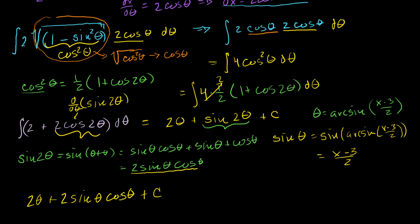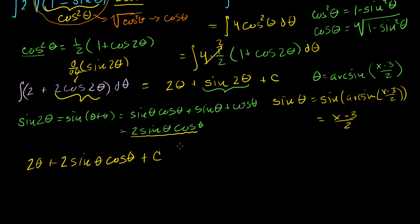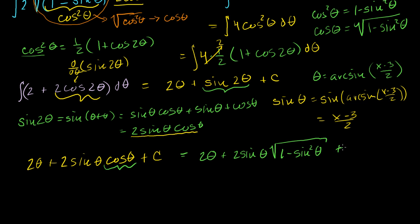Now I want to write everything in terms of sine of theta, but I still have a cosine of theta there. We know cosine squared of theta equals 1 minus sine squared of theta, so cosine of theta equals the square root of 1 minus sine squared of theta. That seems to add complexity, but the neat thing is it's expressed in terms of sine of theta. So our antiderivative becomes 2 theta plus 2 sine of theta times the square root of 1 minus sine squared of theta, plus C.